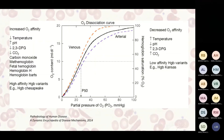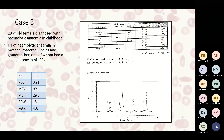Haemoglobin Bethesda has an increased affinity for oxygen, resulting in a leftward shift in the haemoglobin–oxygen dissociation curve: it binds oxygen more easily but releases it more reluctantly.